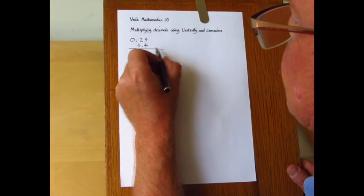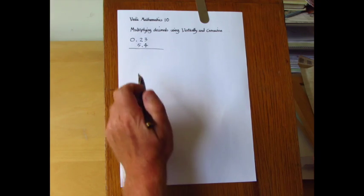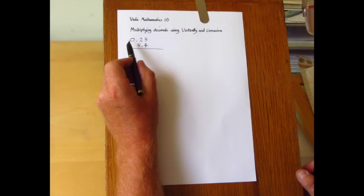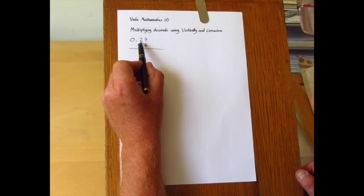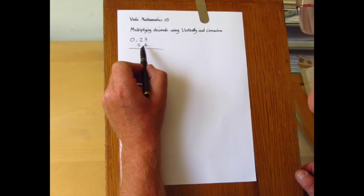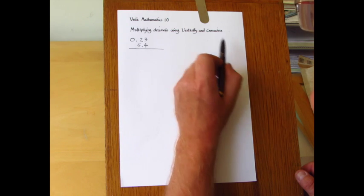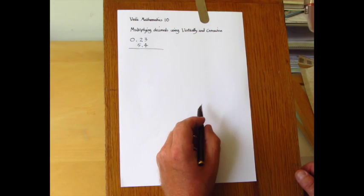Now I've placed the digits not in place value, so I haven't put the five, which is the units digit, under the zero. But I've placed the digits so as to suit the vertically and crosswise pattern, and that makes things far easier.